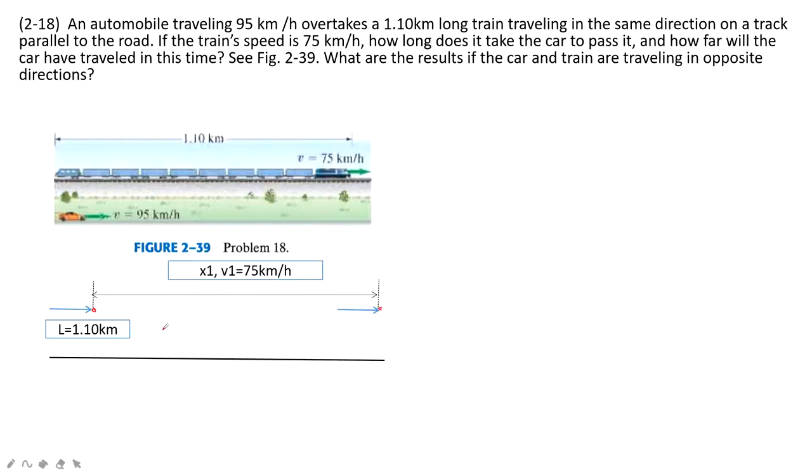At the same time, if we want the car to just overpass this train, at initial position the car is there. At the final position, the car is there. And we can consider the car as a simple point. We don't consider its size. So the displacement it moved is x2, and v2 is 95 km per hour.